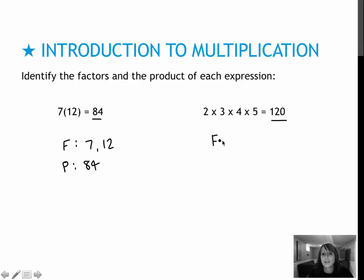For my second example, the factors would be two, three, four, and five. And the product would be 120.